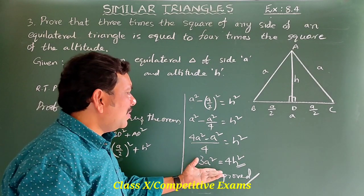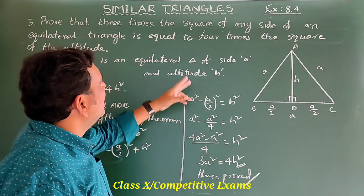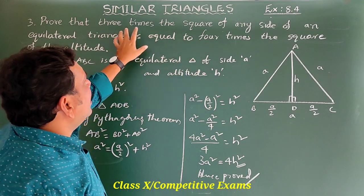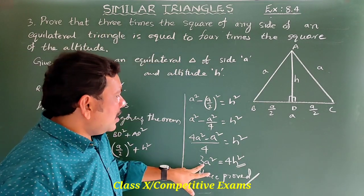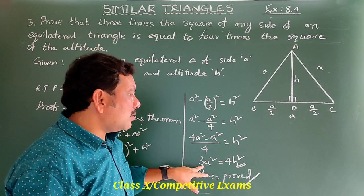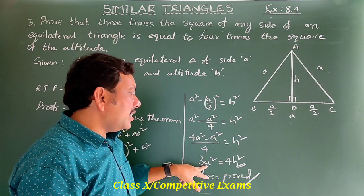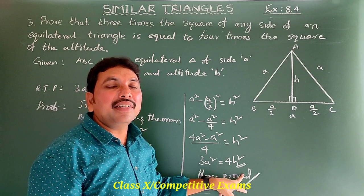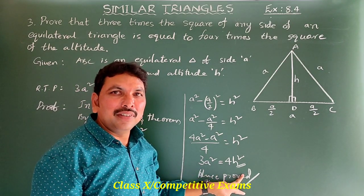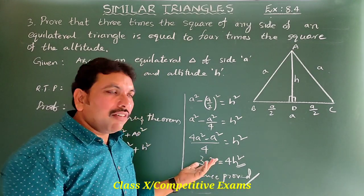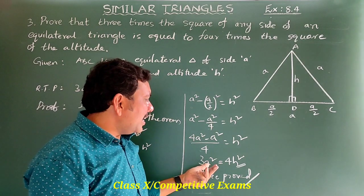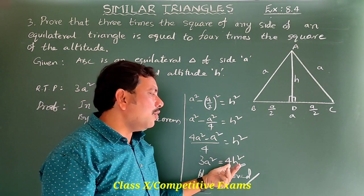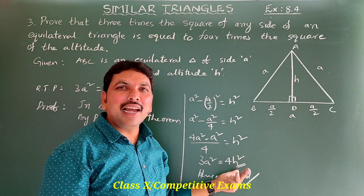Hence proved. In an equilateral triangle, three times the square of any side is equal to four times the square of its altitude.